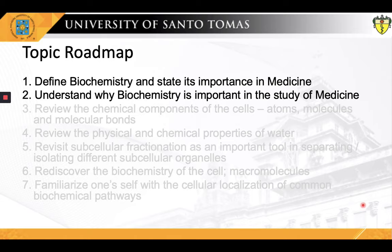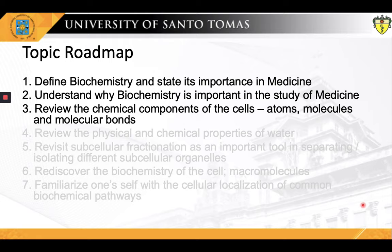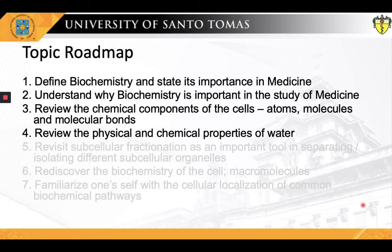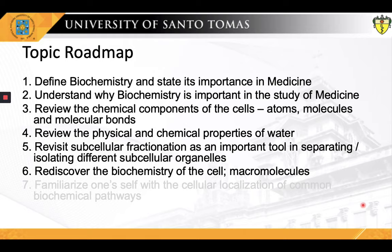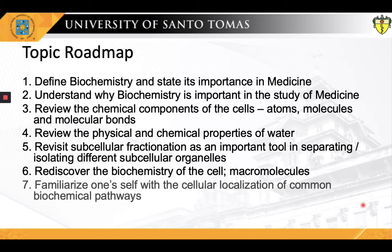Next, we will review the chemical components of the cells — atoms, molecules, and molecular bonds. We have to go down to the molecular level in order to fully understand how atoms can come together to form molecules and molecules to macromolecules, and so on and so forth. Fourthly, water is a crucial part of all biological systems, so we will spend some time reviewing the physical and chemical properties of water. Next, we have to see how the pioneers in biochemistry were able to study the different biochemical structures and functions of organelles. Thus, it is only prudent that we revisit subcellular fractionation as an important tool in separating and isolating the different subcellular organelles. Following this will be a brief overview of the different macromolecules that you will be encountering in the course of your study of biochemistry. And lastly, we will be familiarizing ourselves with a very important biochemical principle — the concept of compartmentalization, the cellular localization of both molecules and processes.